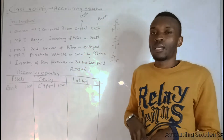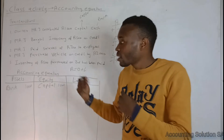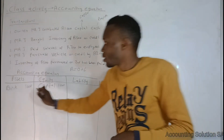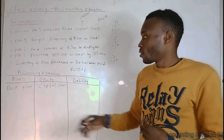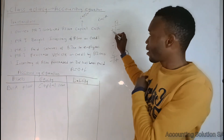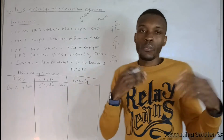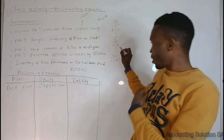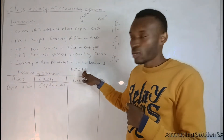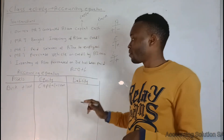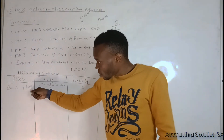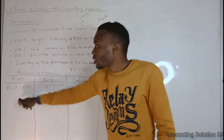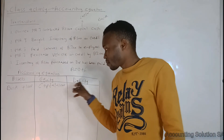Back to Transaction 1: did we receive money as a business through this capital? Yes, we received money, so bank gets a plus R1,000. We debited an asset, so the other side must be credited — which means capital also gets a plus. Now checking the equation: Assets = Equity + Liability: +1,000 = +1,000 + 0. If you used negative one thousand, it would not balance, so that would be wrong.